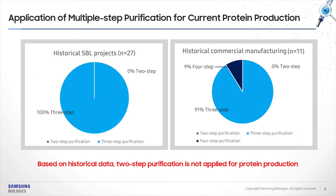To reduce manufacturing costs and shorten development timelines, the biotechnology industry is increasingly considering the applications of two-step purification platforms. Conventional processes for purification of monoclonal antibodies mostly consist of a three-step purification. According to historical Samsung Biologics projects and commercial manufacturing, most purification steps were dependent on three-step, and there are no cases for application of two-step purification.